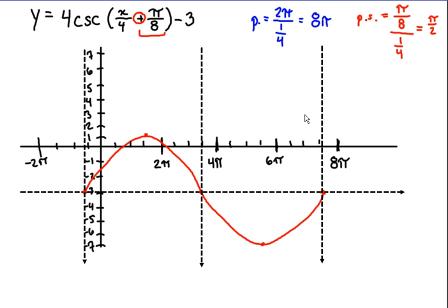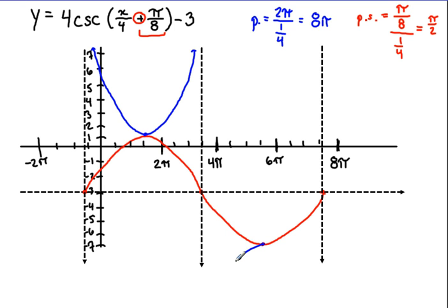With the stage set, all we have left is to use the sine maximums and minimums to draw in our cosecant. From a maximum, we draw up and away from the graph, approaching the asymptote but never crossing it. From the minimum, we go down and away toward the asymptote but never crossing it — down and away but never crossing.